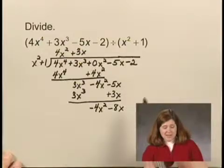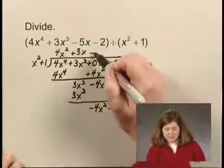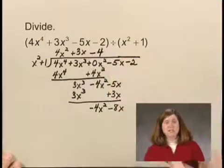Now I divide again. -4x^2 divided by x^2 is -4. I write a -4 in the quotient.